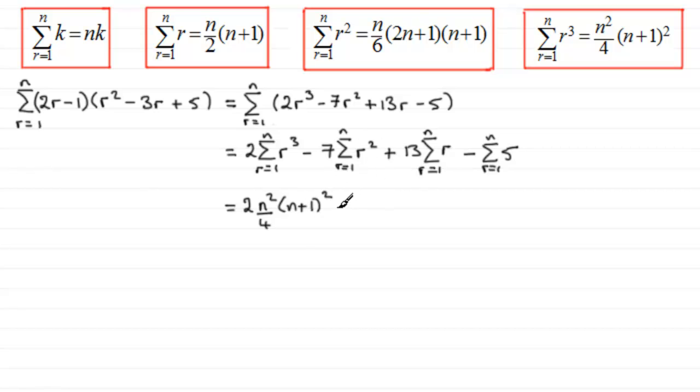For the next term, we've got minus 7 times the sum of r squared, which is this formula here: n over 6 times 2n plus 1 multiplied by n plus 1. For the third term, we've got plus 13 times Sigma r, so Sigma r is going to be n over 2 multiplied by n plus 1.